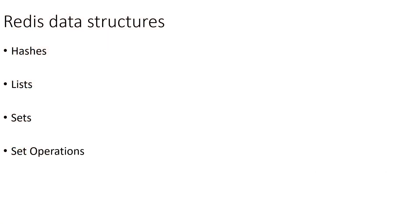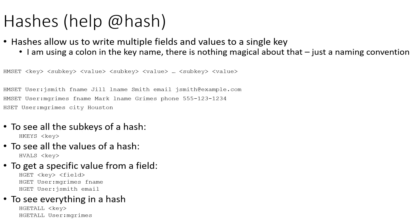Moving on, we're going to look at the data structures in Redis: hashes, lists, sets, and set operators, which should be kind of familiar from relational database work. Hashes basically just allow us to write multiple fields and values to a single key.